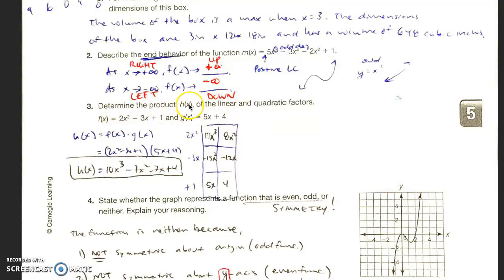Determine the product h of x of the linear and quadratic factors. f of x equals 2x squared minus 3x plus 1, and g of x equals 5x plus 4. So it's saying determine the product, which means multiply the linear. This is a linear because it's to the power of 1 and then quadratic to the power of 2. So when you multiply those two, I did the box method, just multiplying.